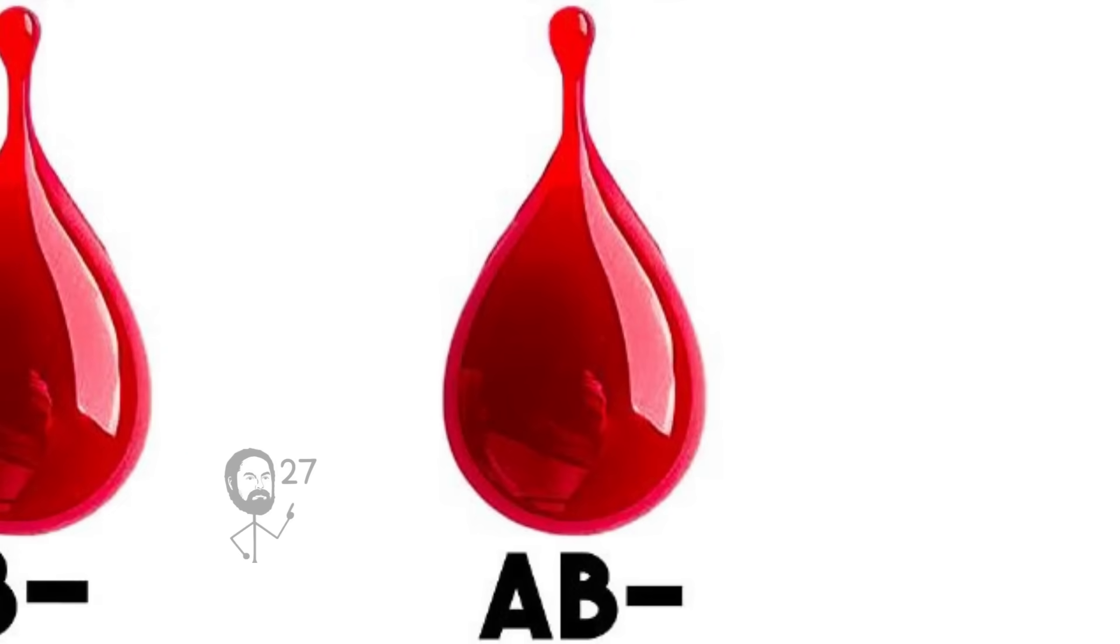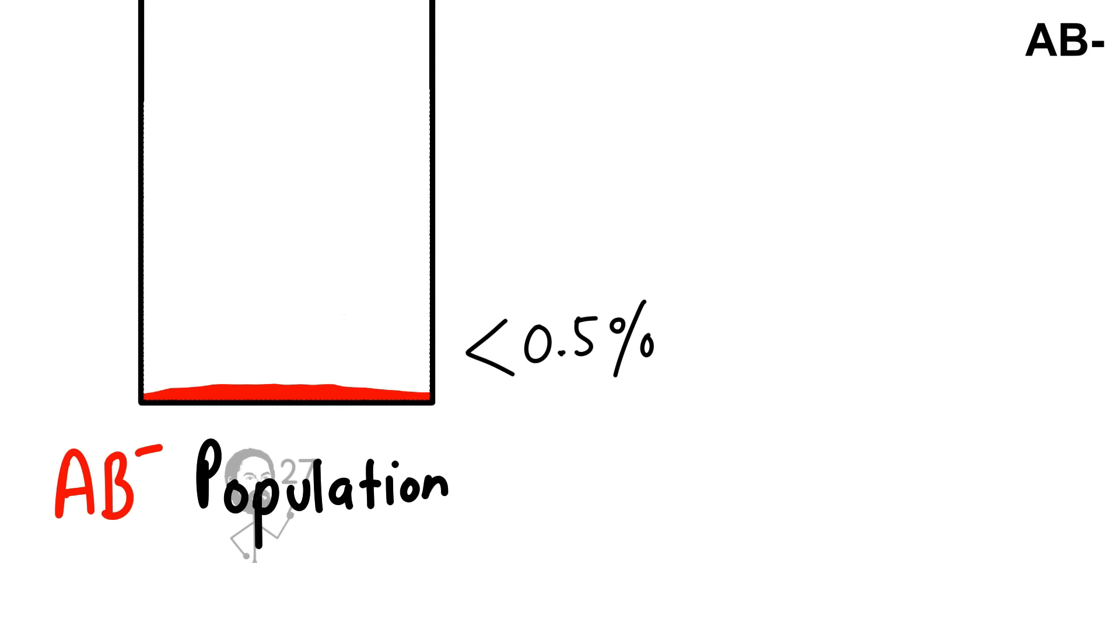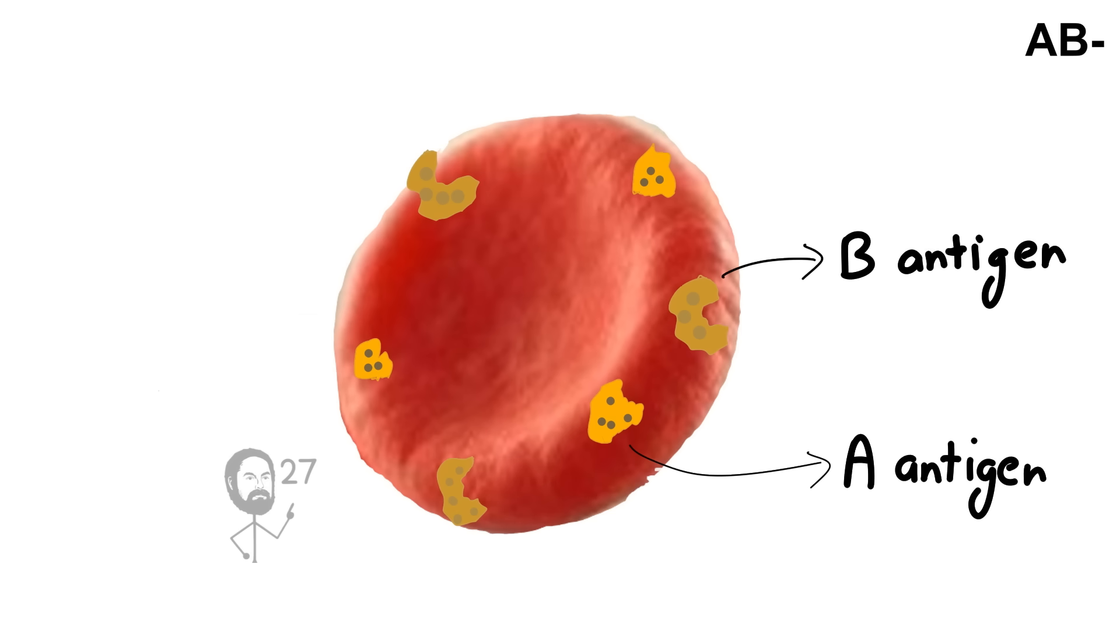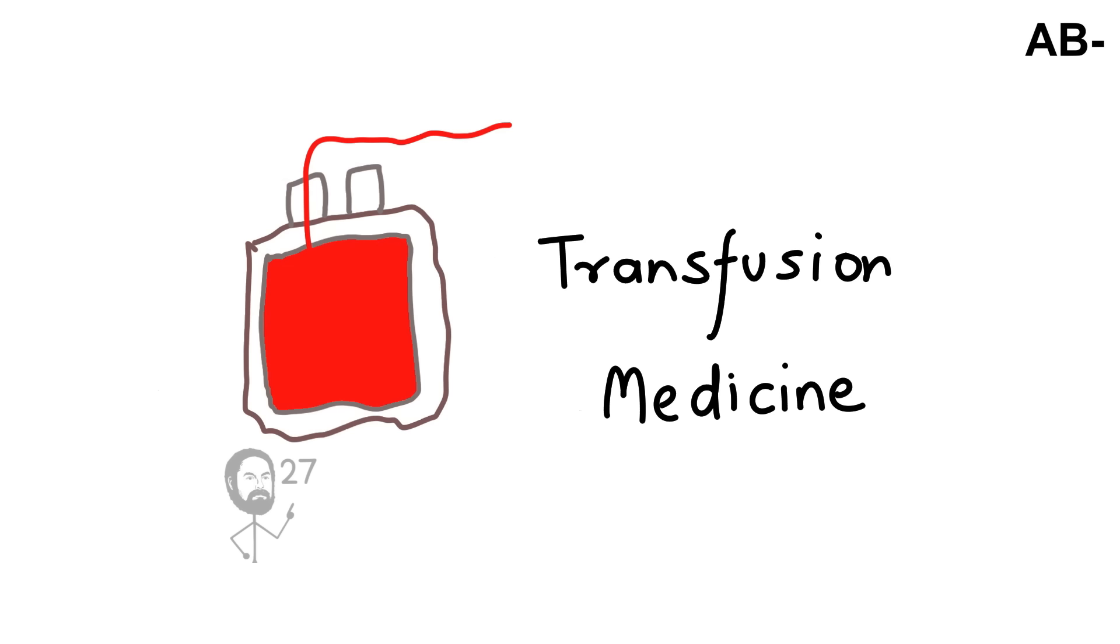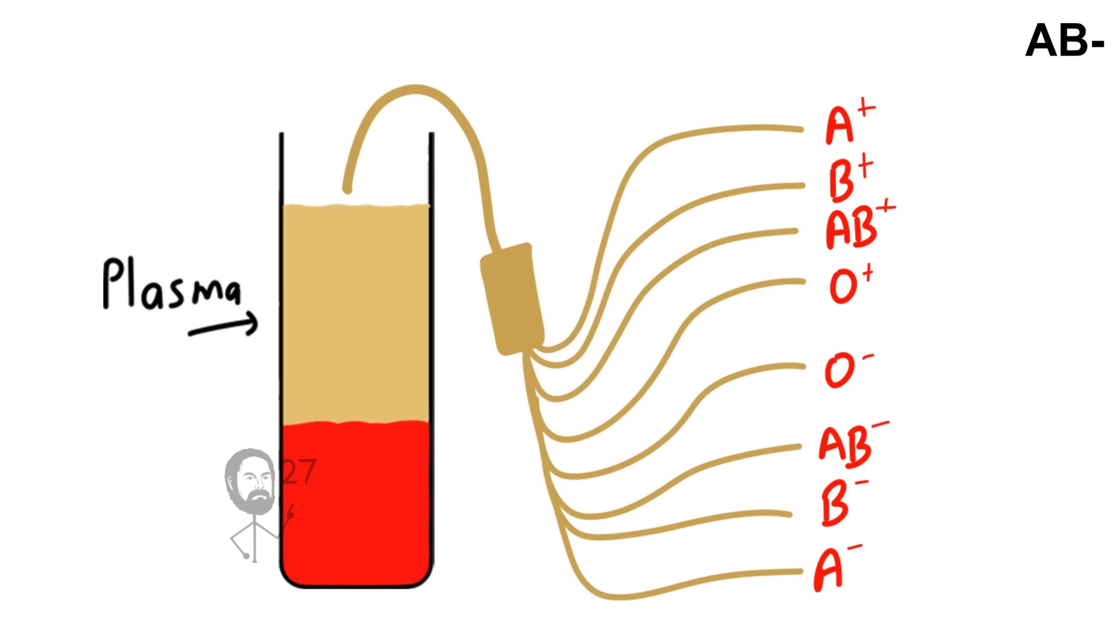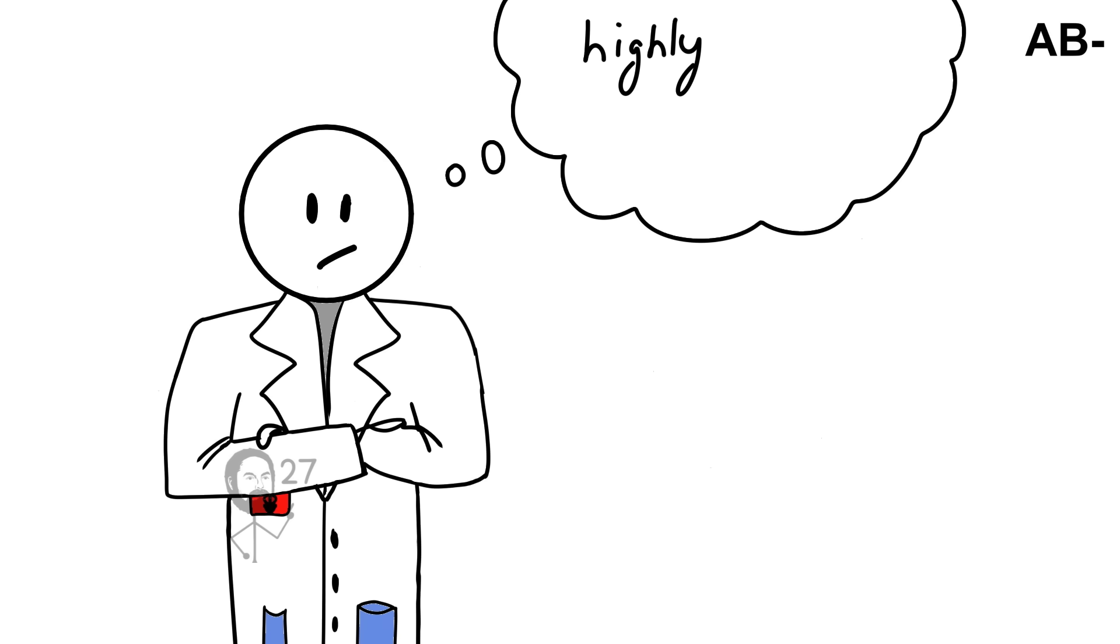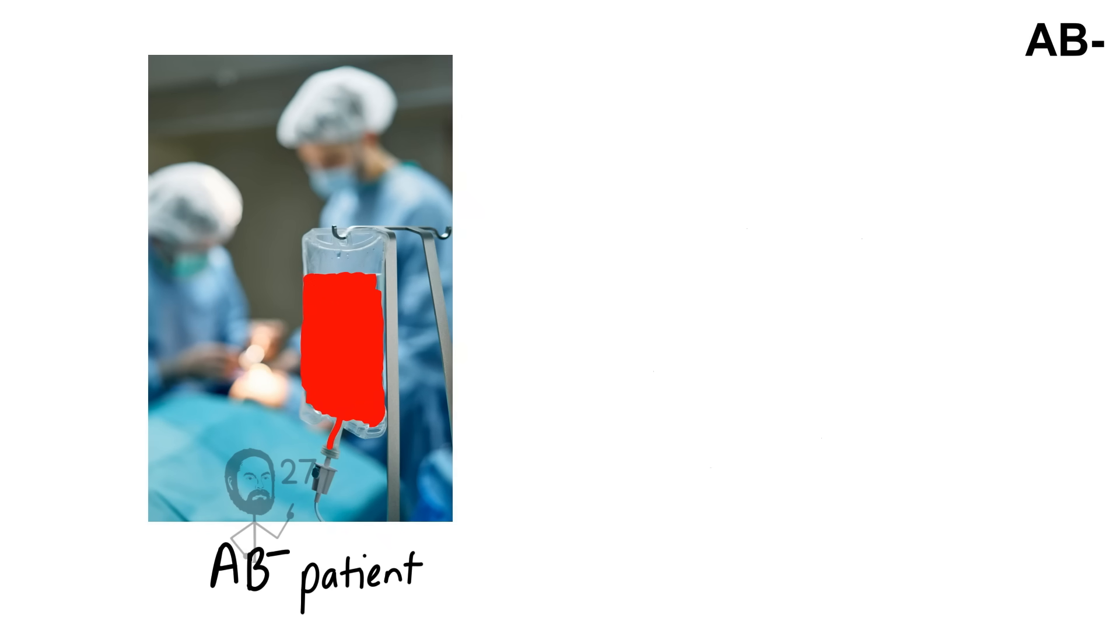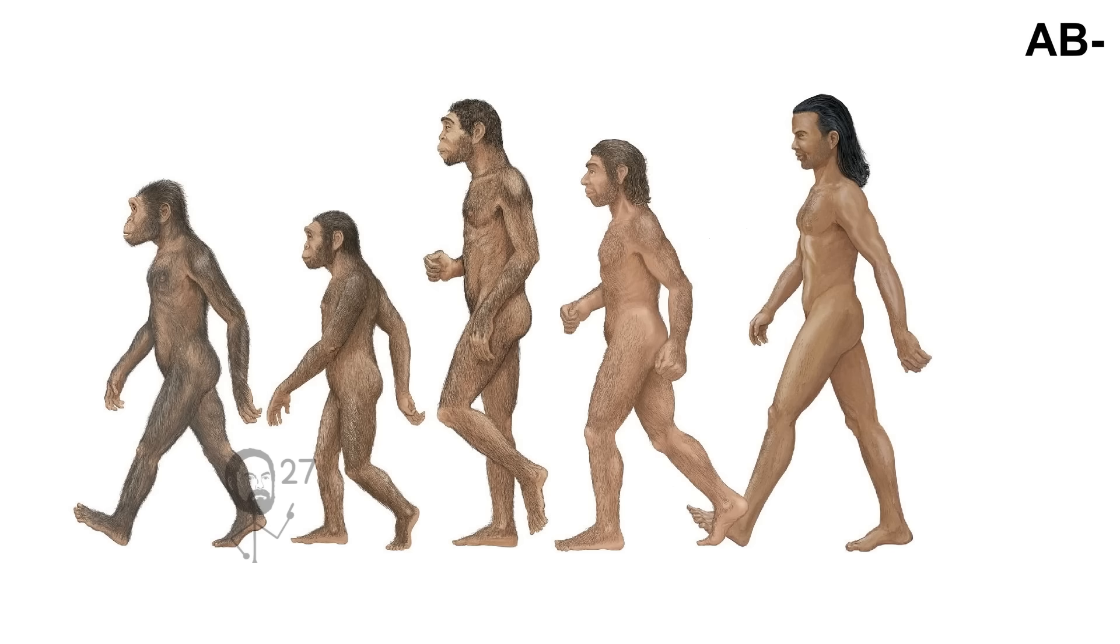AB-negative is the rarest of the eight main blood types, carried by less than half a percent of the global population. Its red blood cells display both A and B antigens, but lack the RHD factor, a combination that makes it extremely uncommon. In transfusion medicine, AB-negative plasma is particularly valuable because it can be given to patients of any blood type, making it a universal plasma donor. However, AB-negative red cells are highly restricted in availability, and patients with this type can only receive blood from AB-negative, A-negative, B-negative, or O-negative donors.